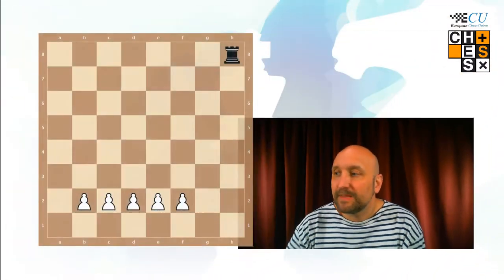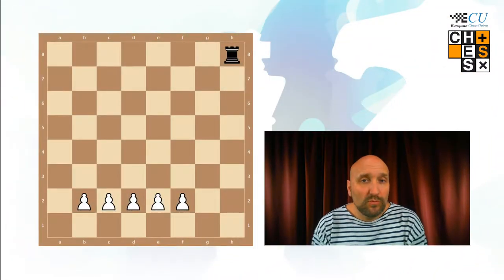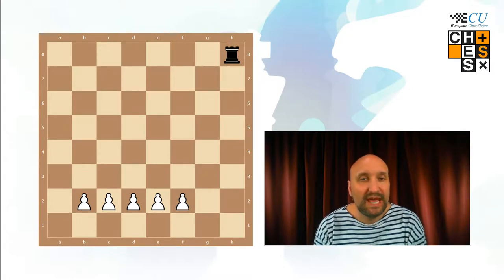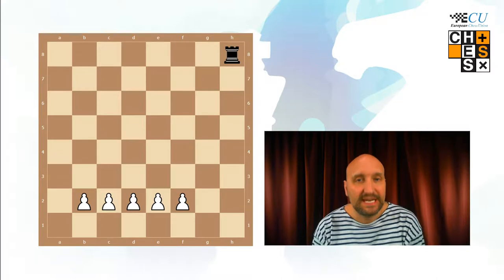This game is played with the following pieces. We have five white pawns, one on b2, c2, d2, e2 and f2, and we have a black rook on h8.